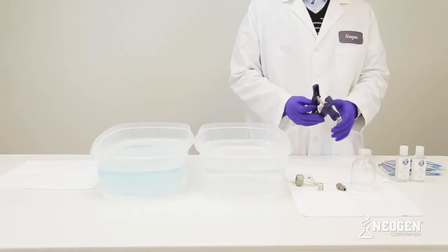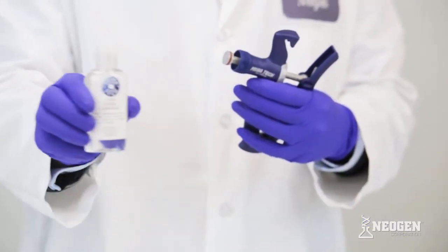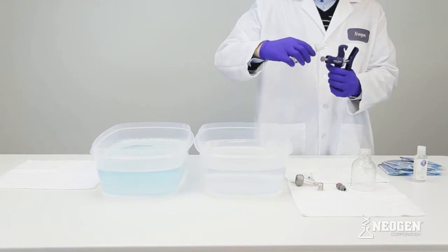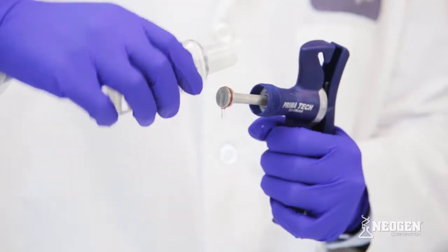Before reinstalling the barrel assembly, apply one to two drops of food grade lubricant to the piston o-ring. Squeeze the handle to move the piston forward and make the o-ring more accessible.